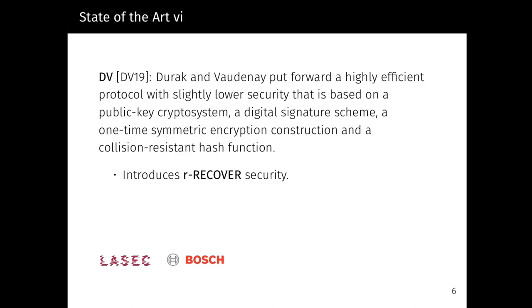In 2019, Durak and Vaudenay put forward a highly efficient ratcheting protocol with slightly lower security in the standard model that only requires ordinary cryptosystems. It is based on a public key cryptosystem, a symmetric key system, a digital signature scheme, and a hash function. They further introduced the notion of r-RECOVER security, meaning that a participant should not be able anymore to receive genuine messages after having received a forgery, hence detecting the intrusion. Additionally, the authors proved that post-compromised security implies public key cryptography, hence this security level cannot be achieved by symmetric primitives only.